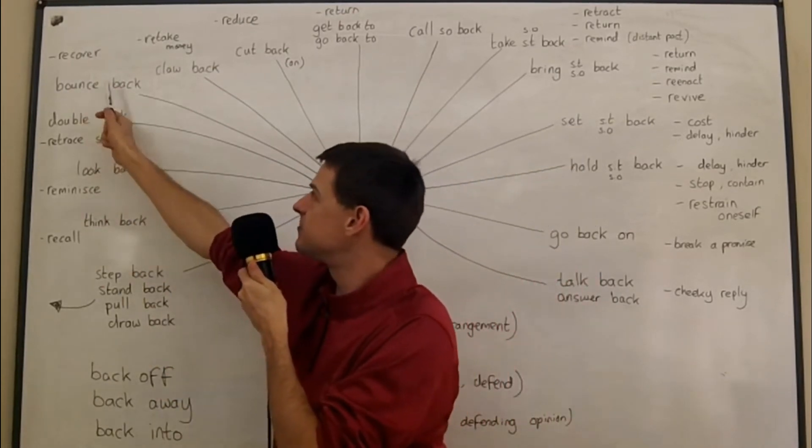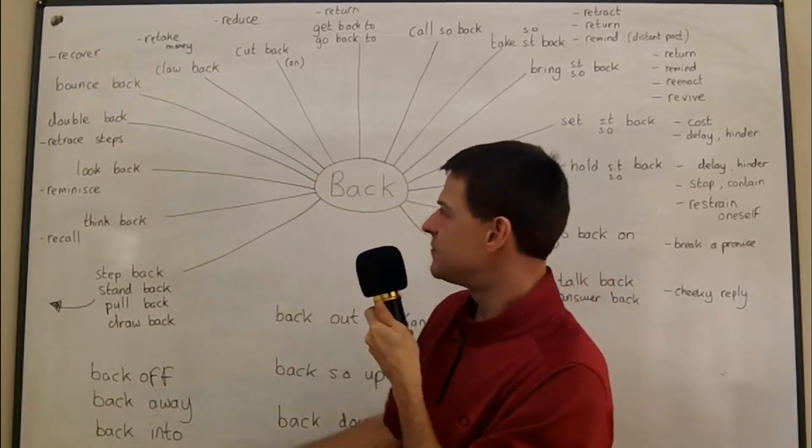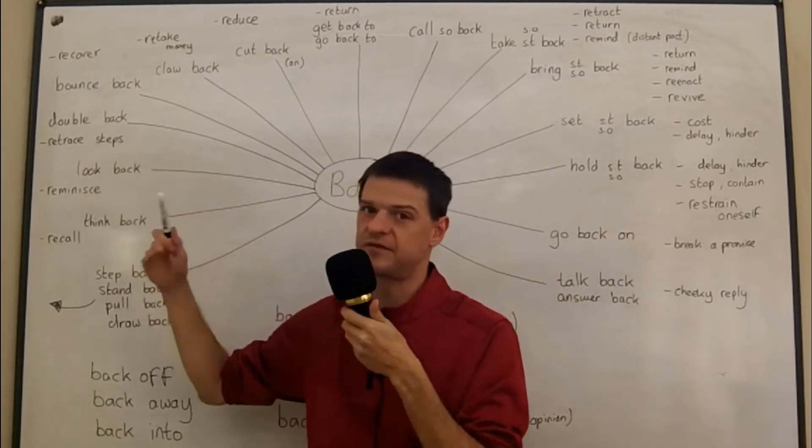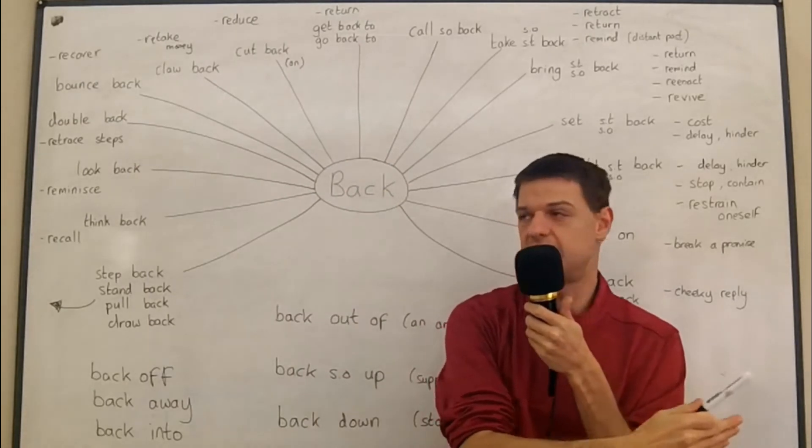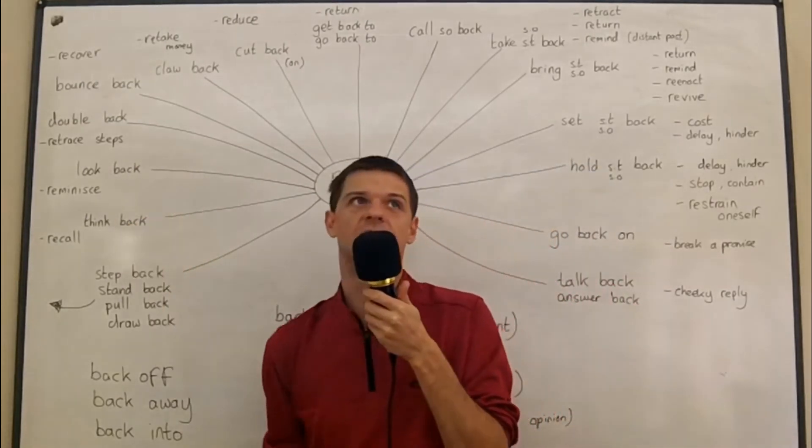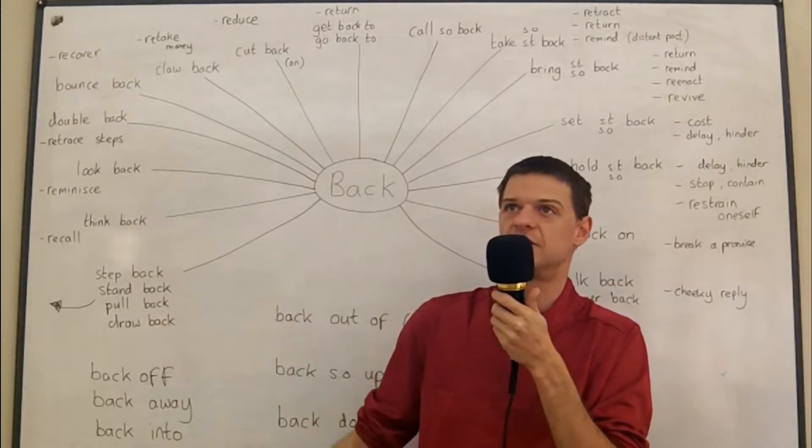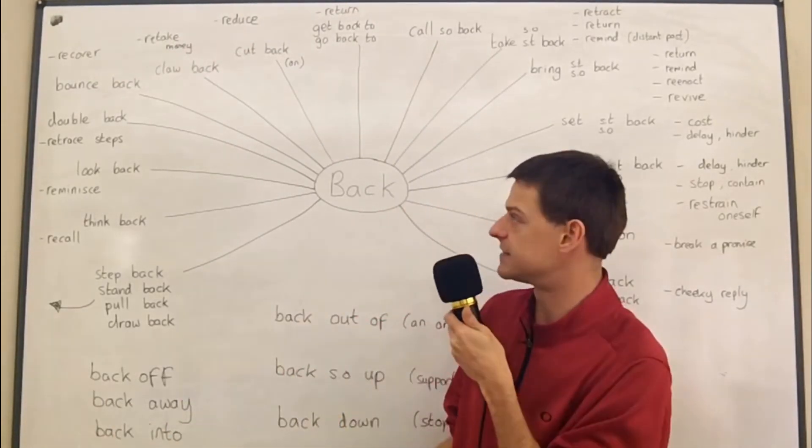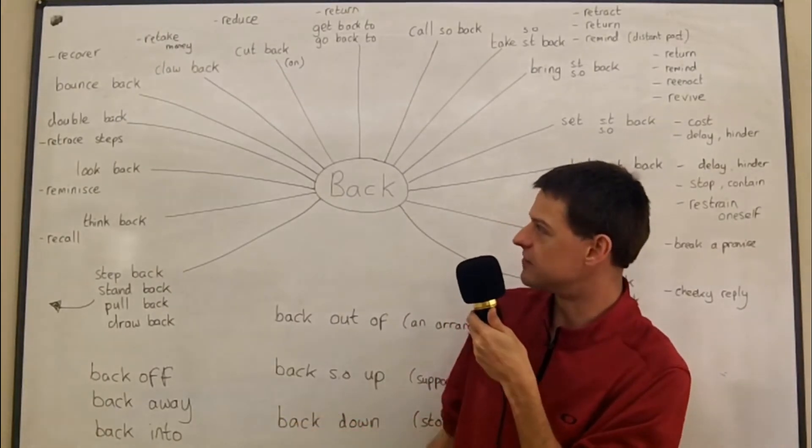If you double back, then you retrace your steps - you go exactly the route which you came. Maybe you've suddenly noticed on the street that your pocket - you haven't got your phone - so you double back to look for it. You retrace your steps and try and find it on the way back.